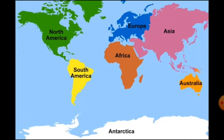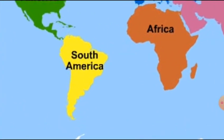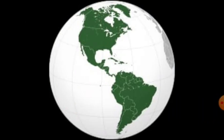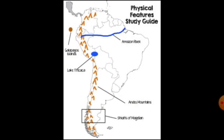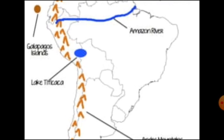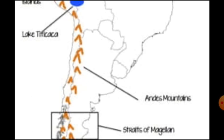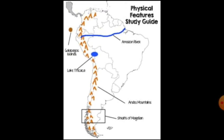Moving on to South America. South America lies mostly in the southern hemisphere. South America is surrounded by two oceans on the east and the west. South America has the world's largest river, the Amazon. The Andes, the world's longest mountain range, runs through its length from north to south.